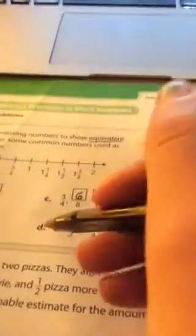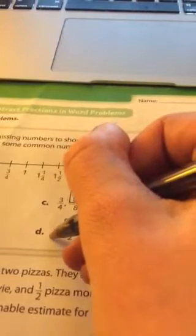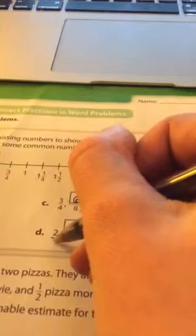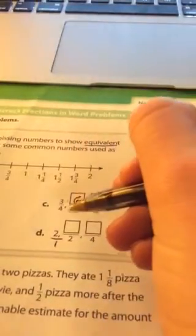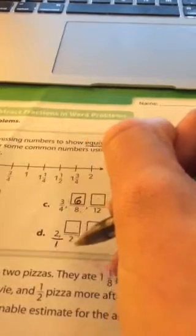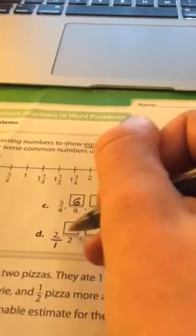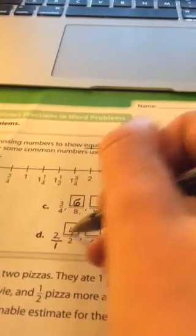Now this one's a little bit more tricky. It will be easier if you rewrite this number as a fraction. Anytime you have a whole number, you can rewrite it as a fraction by putting 1 in the denominator. So now, 1 times what number gives us 2? 2. 1 times 2 is 2. So you also need to multiply the numerator by 2. 2 times 2 is 4.